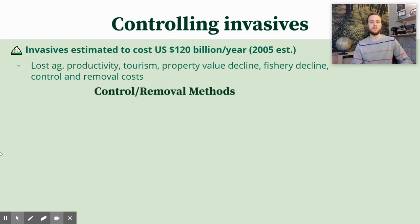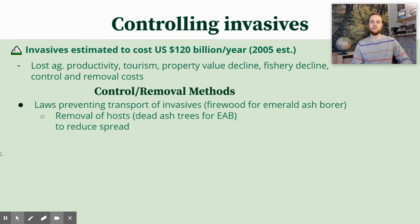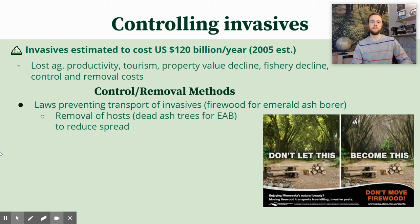So how do we control invasives and mitigate their spread? We can have laws that try to prevent the transport of invasives. A great example is Minnesota and other states cracking down on firewood transport, because firewood can oftentimes contain the emerald ash borer. Controlling its transportation and spreading awareness can help prevent the spread — as illustrated by the message 'don't let this become this,' showing a thriving forest versus a decimated ash forest. We can also remove the hosts of invasives. Counterintuitively, cutting down ash trees — especially dead ones in dense forest populations — reduces the likelihood that the emerald ash borer can spread, since thinning the host population limits the borer's ability to proliferate.